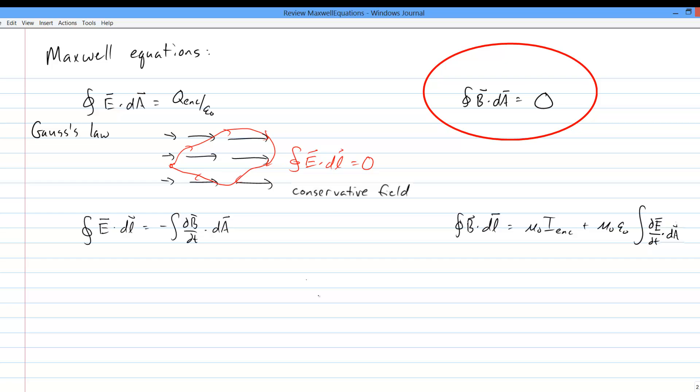The second Maxwell equation has no common name, and it tells us that there's no source for divergent magnetic fields. Magnetic fields with divergence simply don't exist. The third law is Faraday's law, which tells us about electric fields with a different shape, those that have curl.